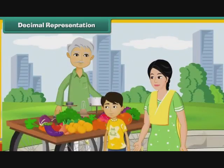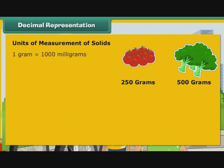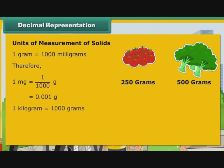Akshay accompanied his mother to the vegetable market. There, he saw his mother buy 250 grams and 500 grams of different vegetables. He wanted to express the quantities purchased as kilograms. To be able to do so, Akshay must first understand the units used to measure quantities of solids. 1 gram is equal to 1000 milligrams. Therefore, 1 mg is equal to 1 by 1000 gram, that is equal to 0.001 gram. 1 kilogram is equal to 1000 grams. Therefore, 1 gram is equal to 1 by 1000 kg, that is equal to 0.001 kg.